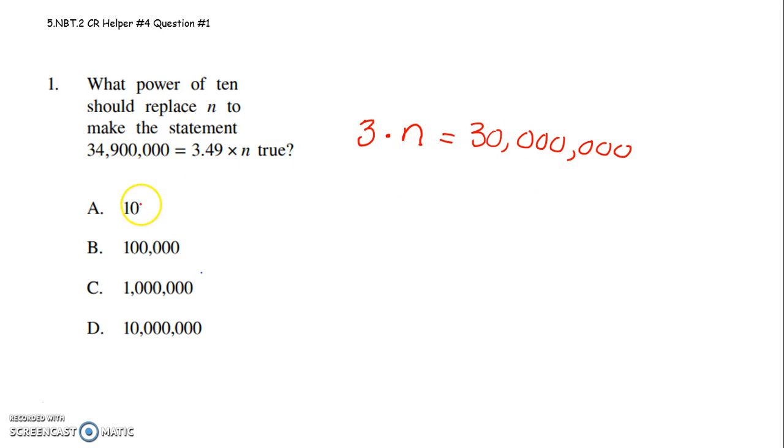Three times what gets me 30 million? Well, I wonder if three times 10 would get me 30 million. Let's see, three times 10, oh no, that's only 30. Okay. I wonder if three times 100,000 would get me to 30 million? So I try three times 100,000. Oh, that gets me to 300,000.